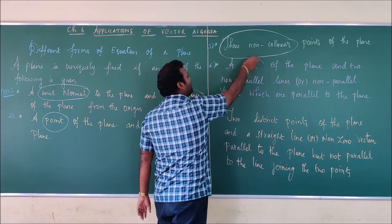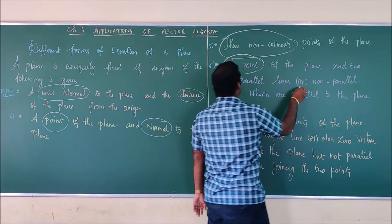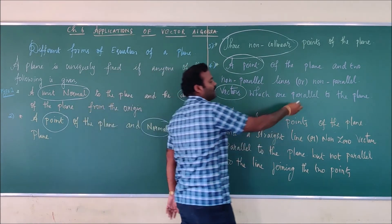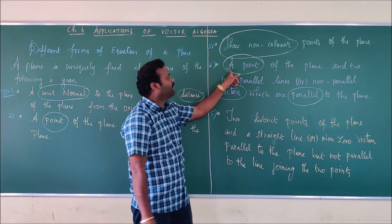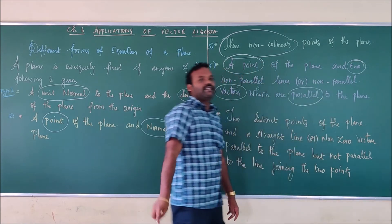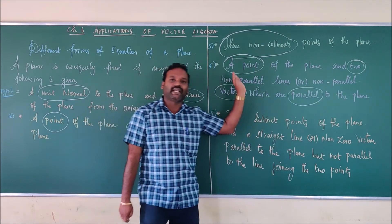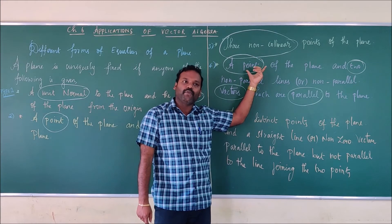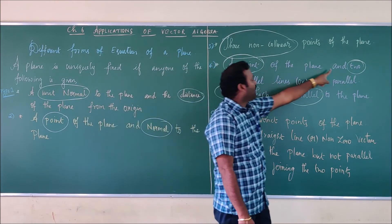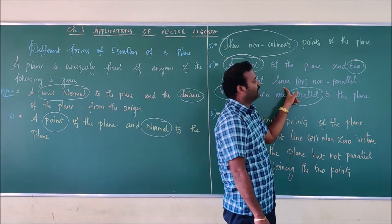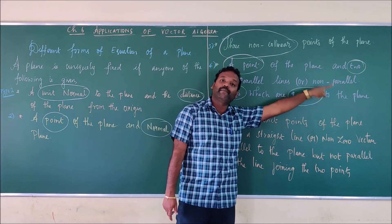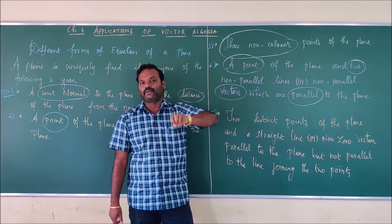Fourth type: you are given a point and two non-parallel vectors that are parallel to the plane. You will be given a point and two vectors parallel to the plane — simply, you can identify this type. A point of the plane and two non-parallel vectors which are parallel to the plane are given.